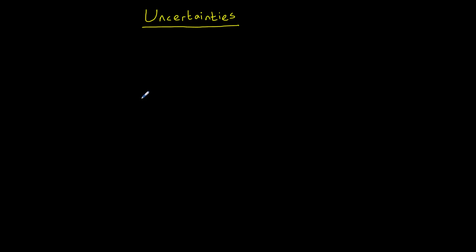Hello. In this video I'll be introducing you to uncertainties and how we can calculate them and how we can combine them. To start with, if we have a range of values, the absolute uncertainty is calculated by dividing the range by 2.